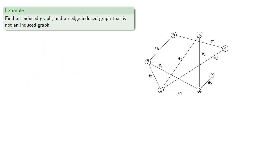We might try to find an induced graph and an edge-induced graph that is not an induced graph. For the induced graph, we'll select any vertices we want, how about these, and include all the incident edges.